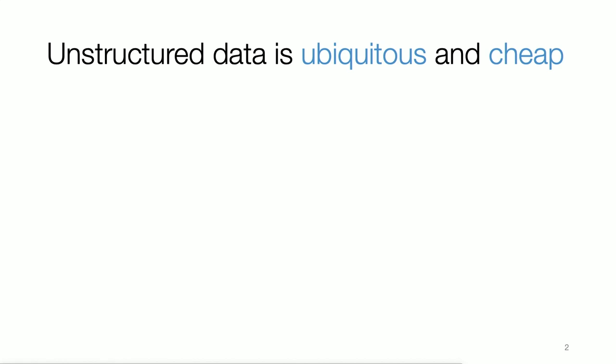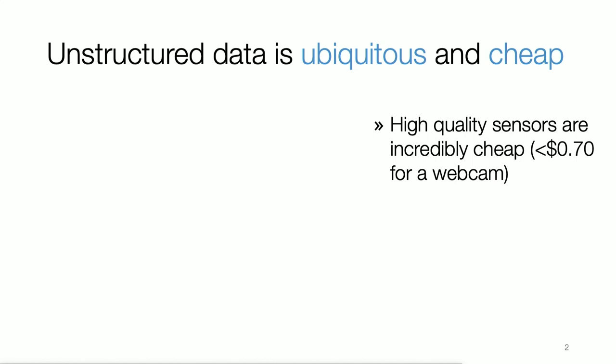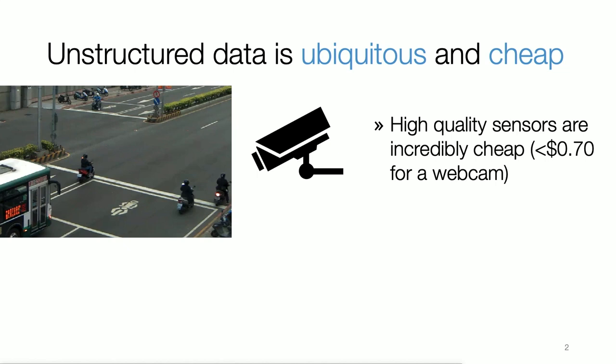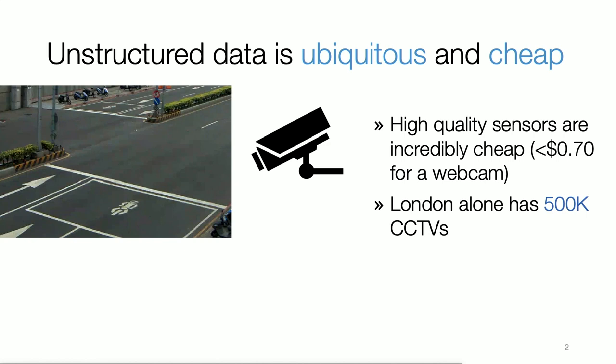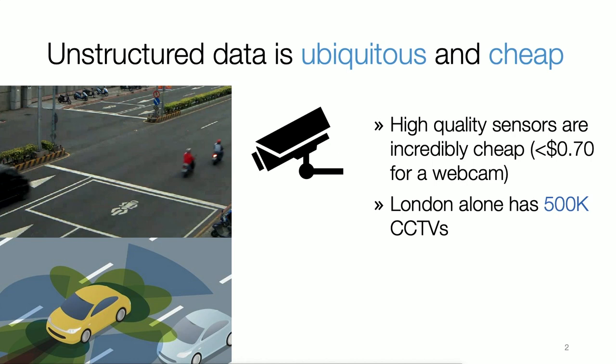To set the stage for this talk, unstructured data is ubiquitous and cheap. For example, there are now high quality sensors that are incredibly cheap — under a dollar for a webcam — and these webcams can be deployed to collect data about the real world, for example about a street corner in Taipei. London alone has over 500,000 CCTVs which can all collect data about the real world.